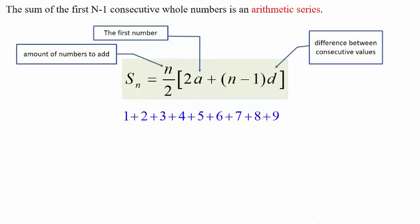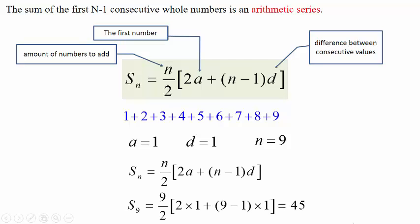For example, let's suppose we're going to sum these nine numbers. The value of a is 1, because that's the first number. The value of d is 1, because the difference between any two consecutive terms is 1. And we are adding nine numbers, so n equals 9. Substituting these three values in our formula, we obtain 45, as you can see, which fits in with the result we got in our previous example.